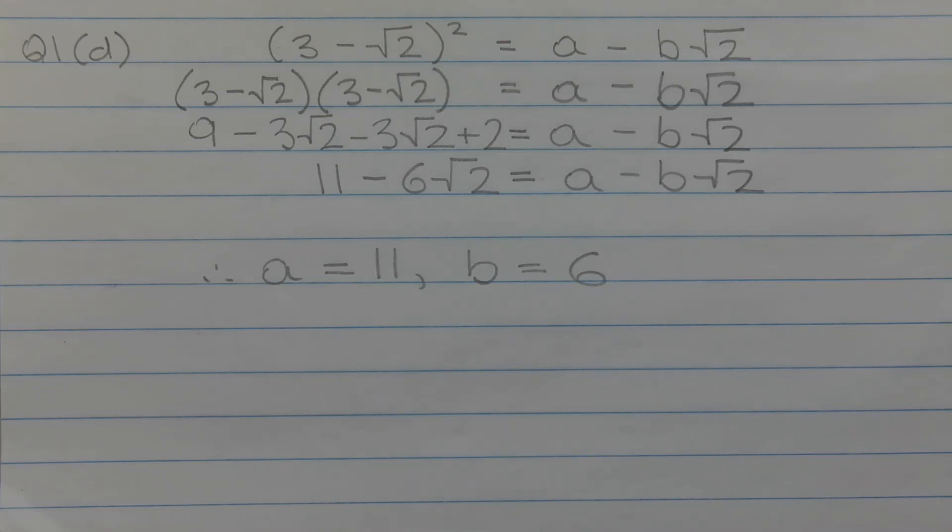Collecting the like terms, we have 9 plus 2 is equal to 11, so this is our rational term. And collecting the terms involving root 2, negative 3 root 2 take away another 3 root 2, we get negative 6 root 2.